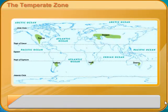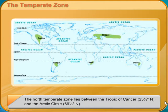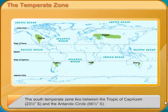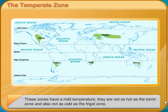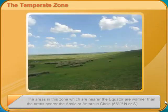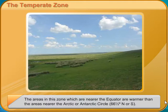The Temperate Zone. The north temperate zone lies between the Tropic of Cancer, 23.5 degrees north, and the Arctic Circle, 66.5 degrees north. The south temperate zone lies between the Tropic of Capricorn, 23.5 degrees south, and the Antarctic Circle, 66.5 degrees south. These zones have a mild temperature — not as hot as the Torrid Zone and not as cold as the Frigid Zone. The areas nearer the equator are warmer than the areas nearer the Arctic or Antarctic Circle, 66.5 degrees north or south.